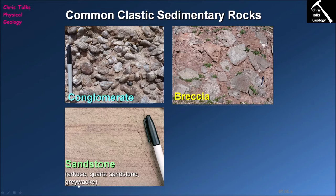Finally, we have greywackes. A greywacke is a mixed sandstone consisting mostly of sand-sized particles but with some finer silt and clay-sized particles mixed in as well. So a greywacke is not going to be exclusively sand-sized particles, whereas an arkose or a quartz sandstone will be made almost exclusively of sand-sized clasts.